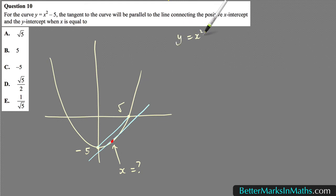If you have y equals x squared minus 5, and you want the x-intercept, you would let y equal 0. So 0 equals x squared minus 5, x squared equals 5, and from there x equals plus or minus the square root of 5.